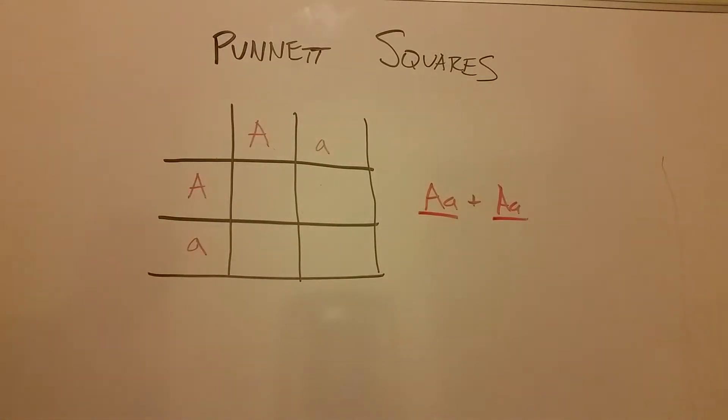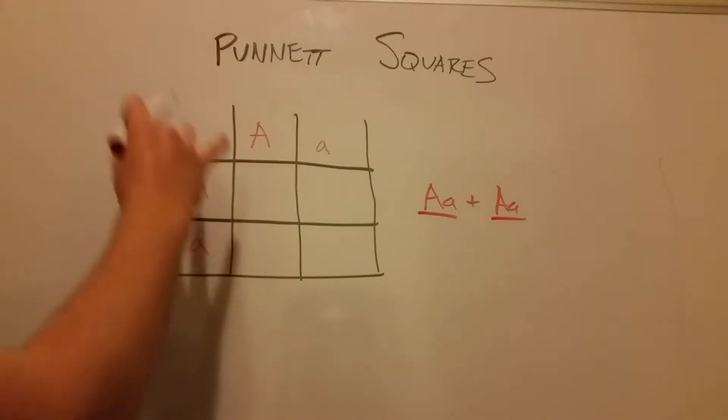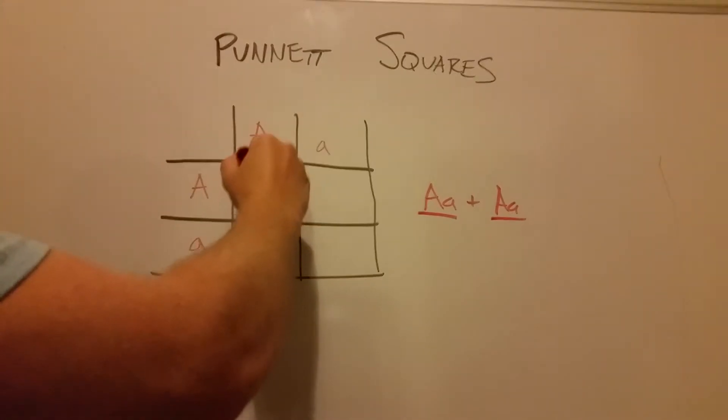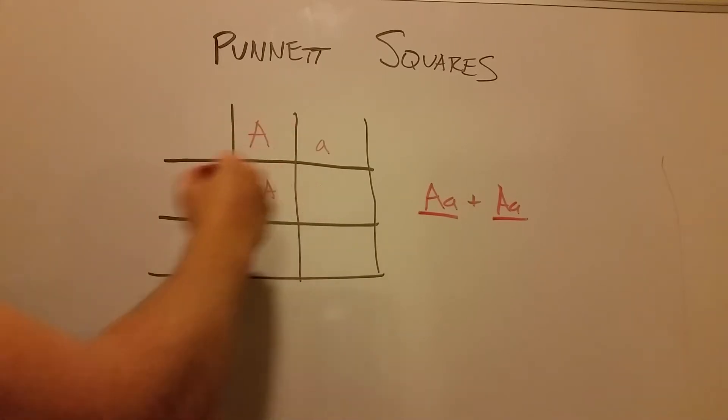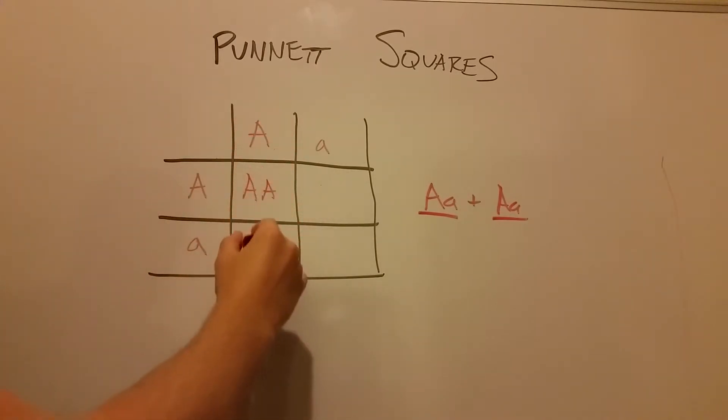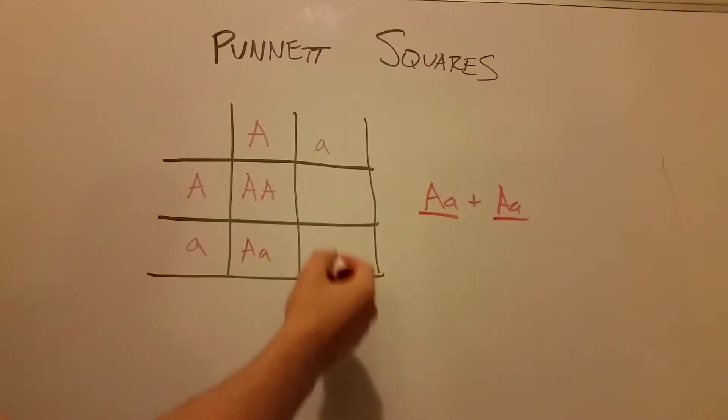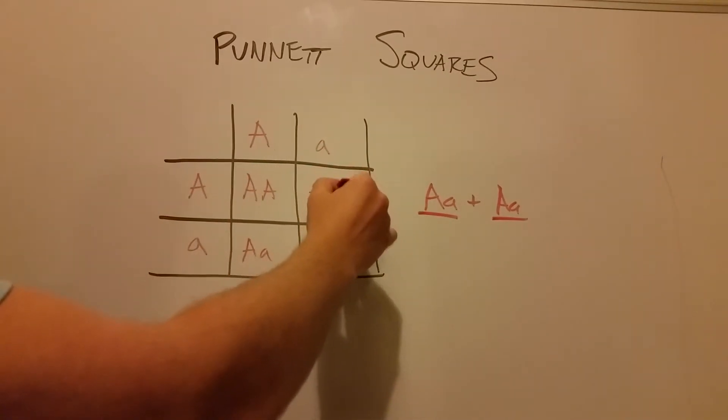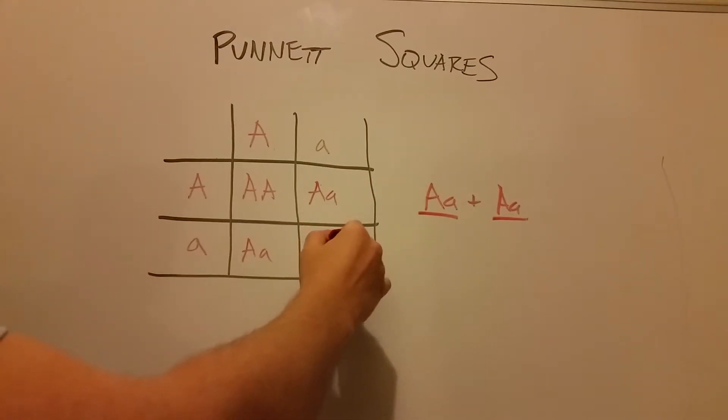And then the beauty of the Punnett square is it gives you all the different possible genotypes. So you just mix together, just kind of like an Excel spreadsheet, the different alleles that line up. So here I'm going to have this big A mixed with this little a. Here it's kind of the same thing. So this big A is going to mix with this little a. So wherever they cross, write that down.